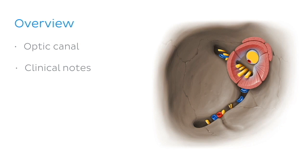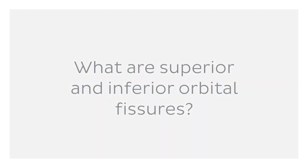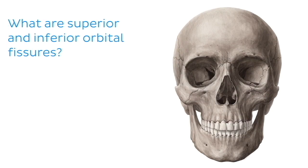As I mentioned in our introduction, fissures allow neurovascular structures to reach their destination. But what exactly are the superior and inferior orbital fissures? We can figure out a lot based on the names of these structures alone.